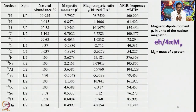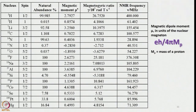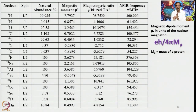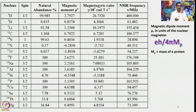One major difference between EPR and NMR: in NMR the magnetic field is kept constant and we vary the radio frequency, whereas in EPR microwave radiation is kept constant and the magnetic field strength is varied. Otherwise they are very similar in terms of selection rules. This table gives different nuclei, their spin, natural abundance, magnetogyric ratio, and the corresponding NMR frequency.